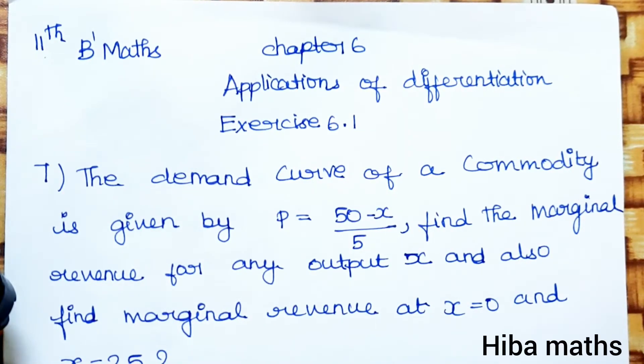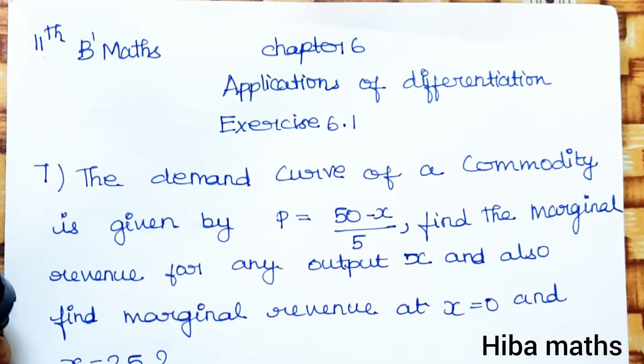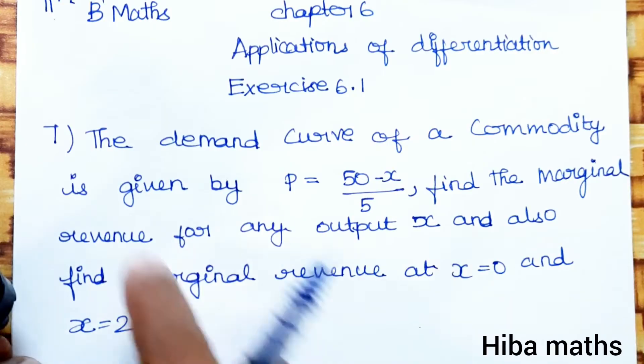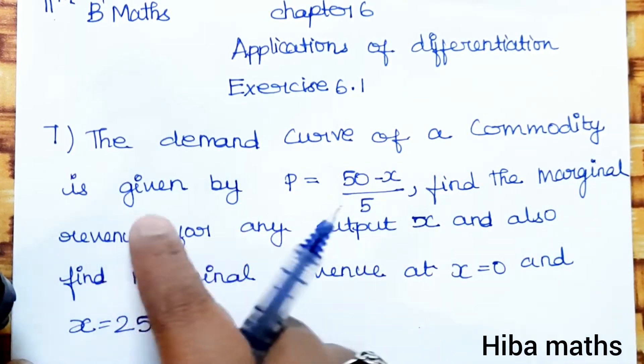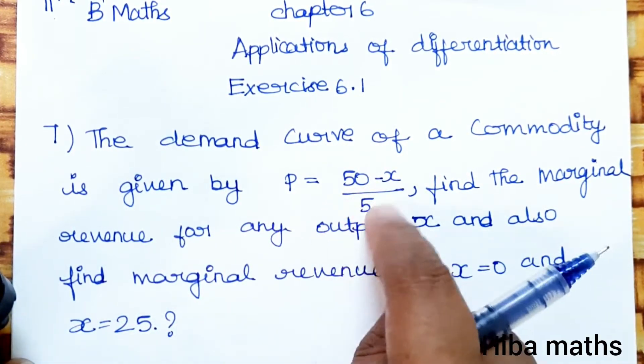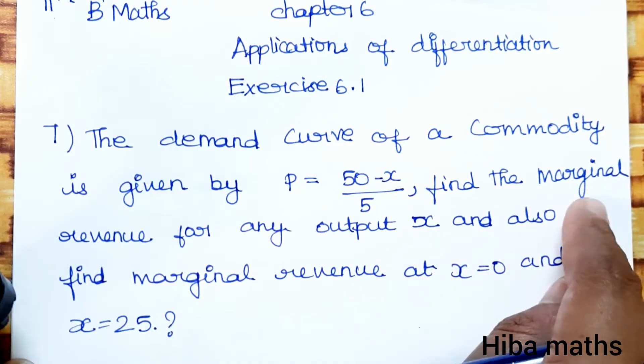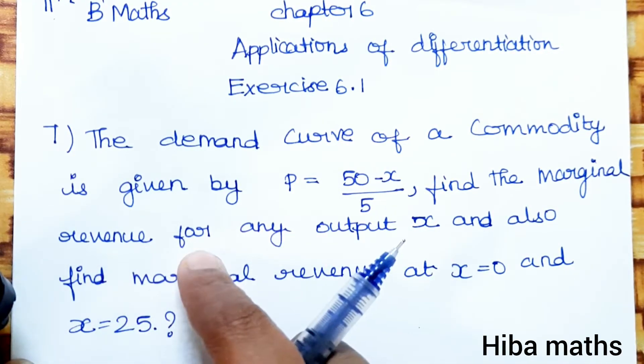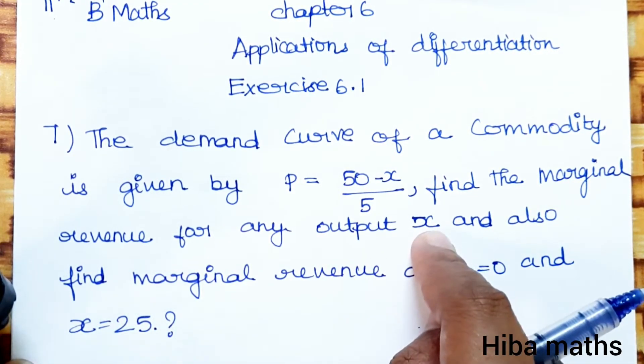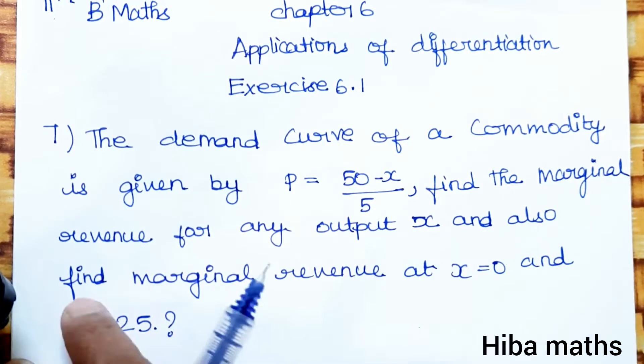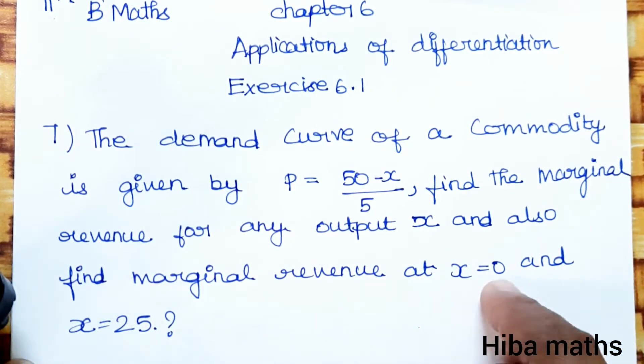Hello students, welcome to HIBA MATHS 11th Standard Business Maths Chapter 6 Applications of Differentiation, Exercise 6.1. In the 7th question, the demand curve of a commodity is given by P equals 50 minus x by 5. Find the marginal revenue for any output x, and also find the marginal revenue at x equals 0 and x equals 25.